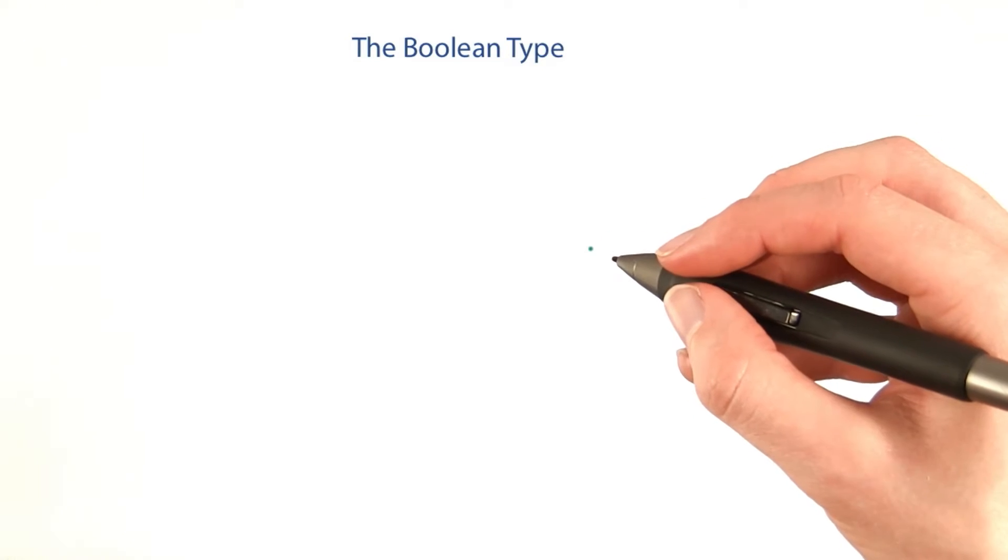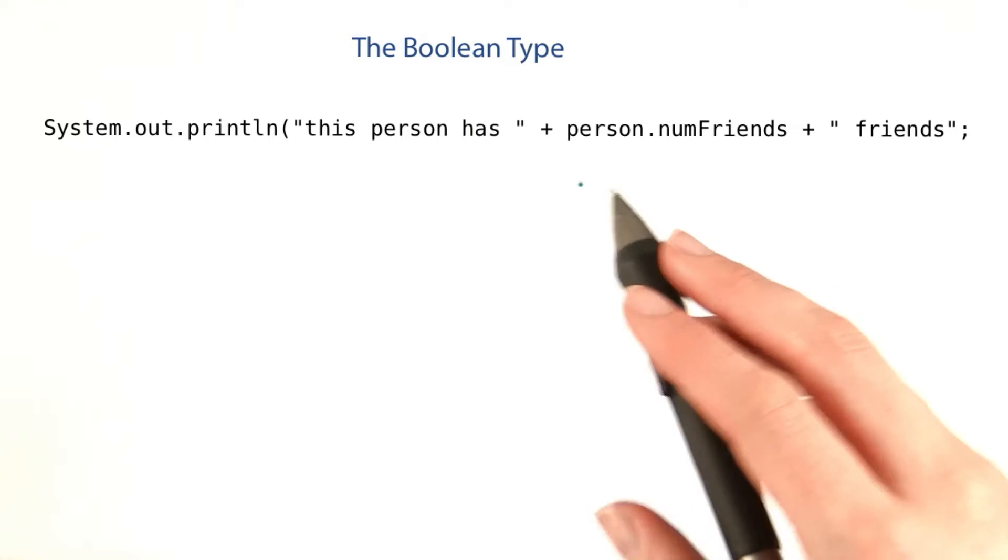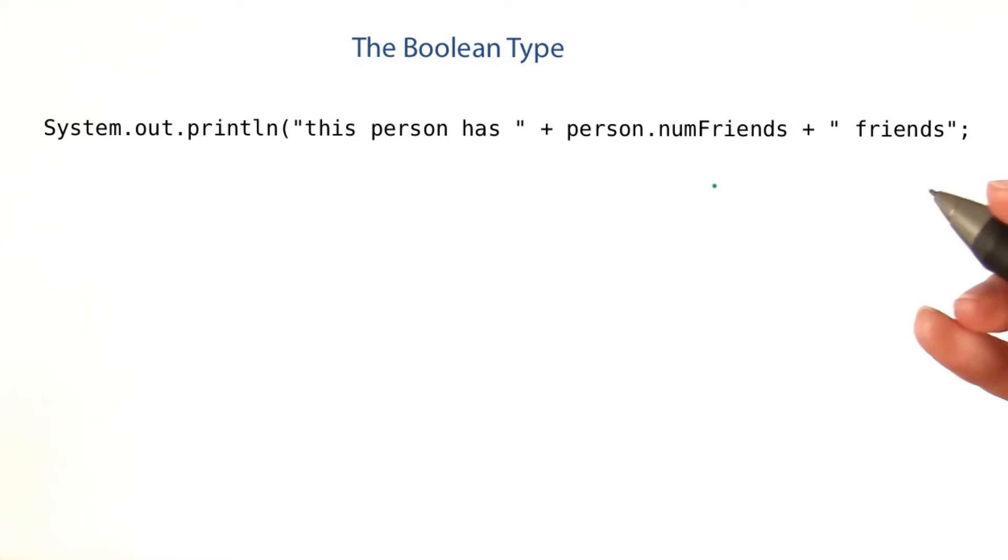A while back, the person class had the ability to return the number of friends someone has. We printed the number of friends like this, which works pretty well most of the time.